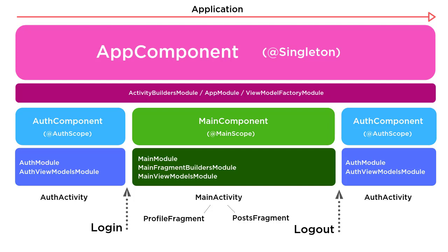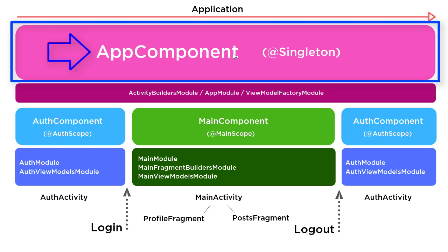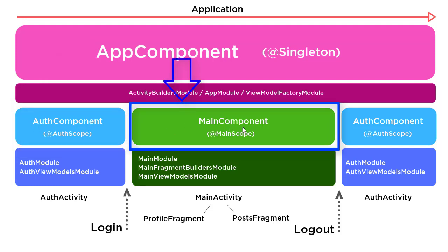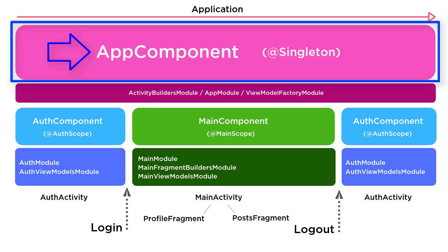We're going to start by taking a second look at the diagram on screen. The three components we have here are the App Component, which is the top-level one and stretches the entire application lifetime. We have the Auth Component, which takes up a portion of it, and the Main Component, which takes up another portion. The key thing to notice is that the App Component stretches the entire lifetime of the application — it starts and will exist for as long as the application is alive, from start to finish.